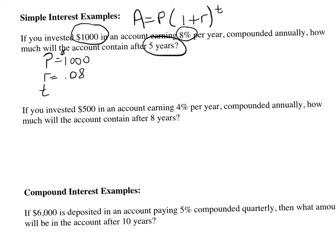T is the number of years, which is 5. So A, our ending amount, will equal 1,000 times (1 plus 0.08) to the T power, which is 5. You'll have our ending amount equal 1,000 times 1.08 to the 5th power.